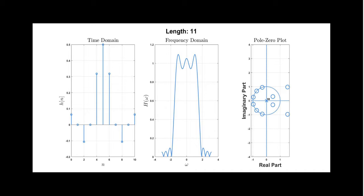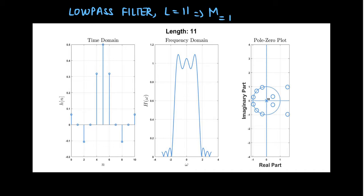This is a typical low pass filter of length equal to 11, and therefore its order m will be equal to 10. From the time domain representation, we can see that it exists from n equal to 0 to n equal to 10. This is the frequency domain representation — we can see that it passes frequencies only till a particular cutoff frequency omega_c equal to pi/2, whereas it attenuates the other frequencies.